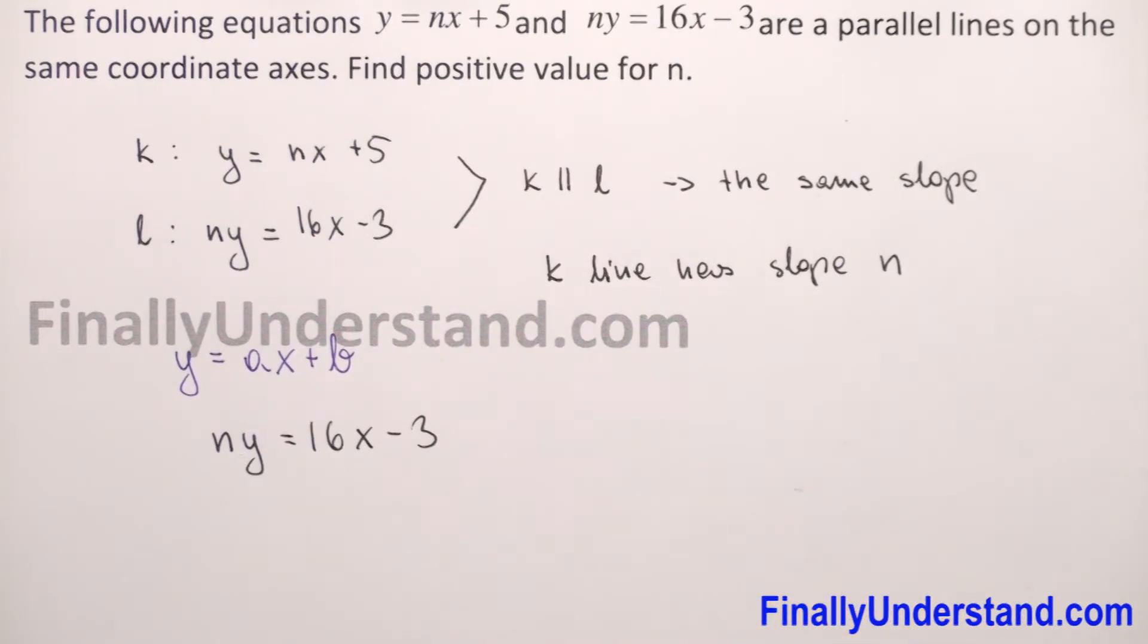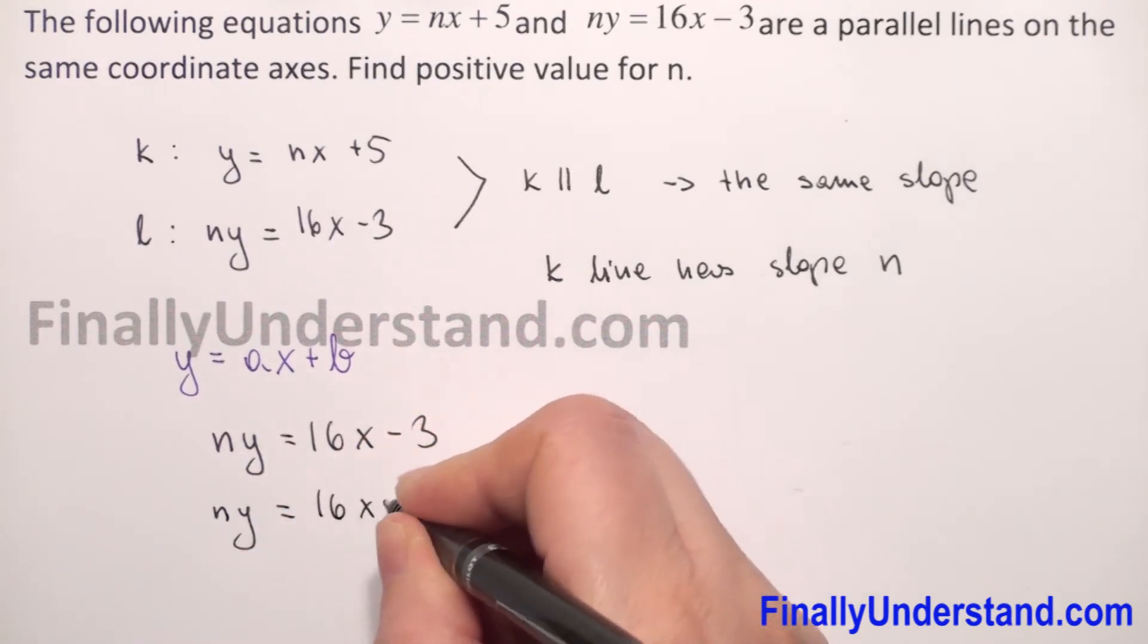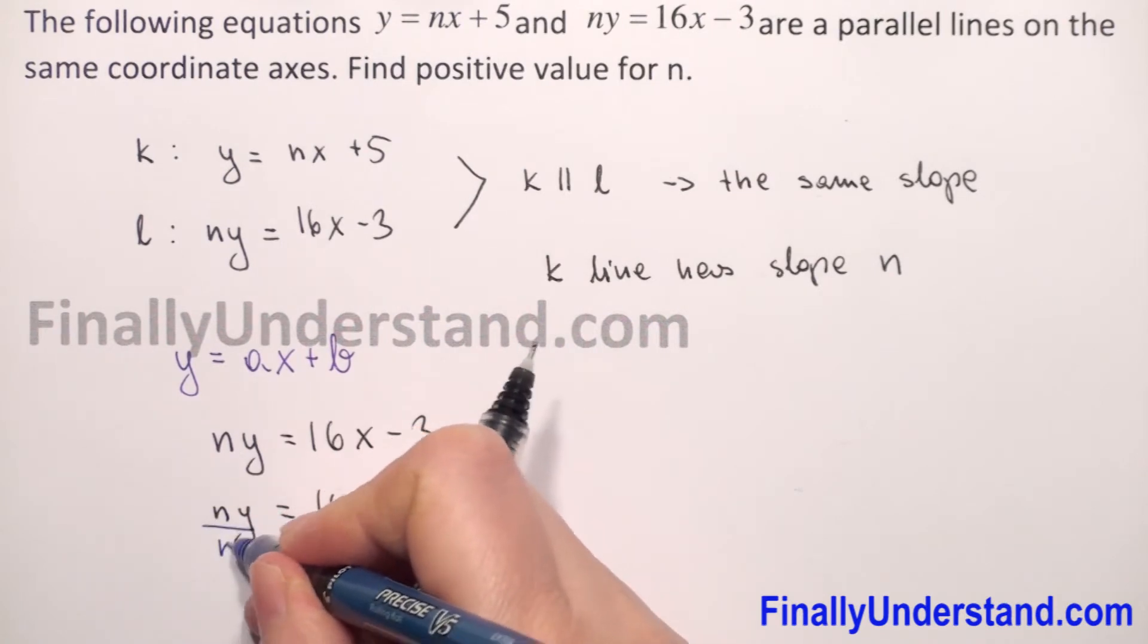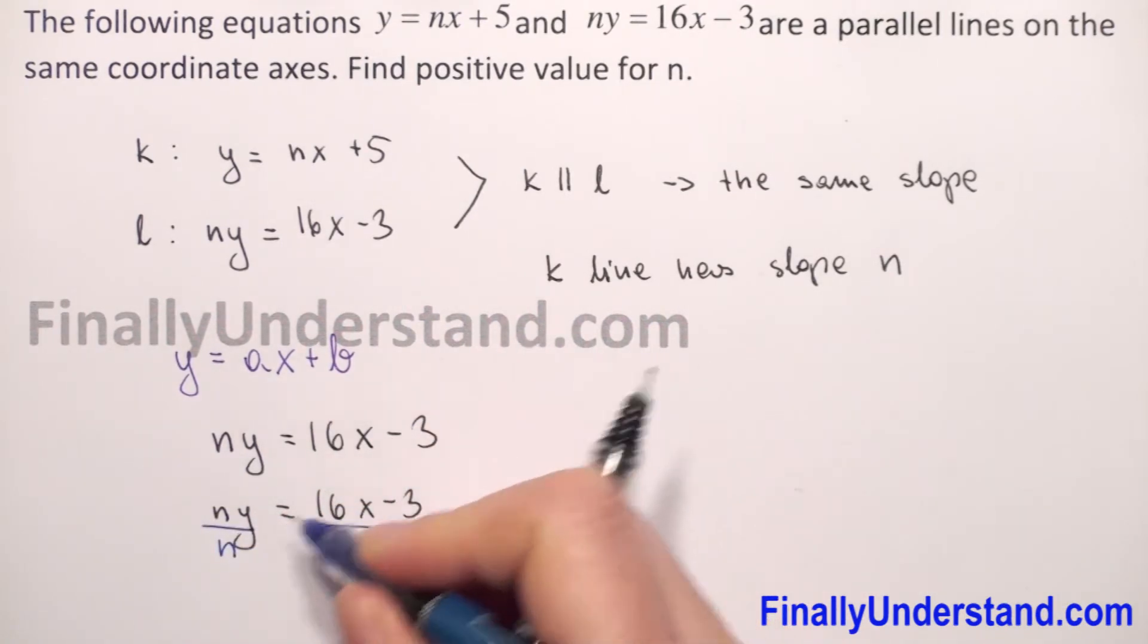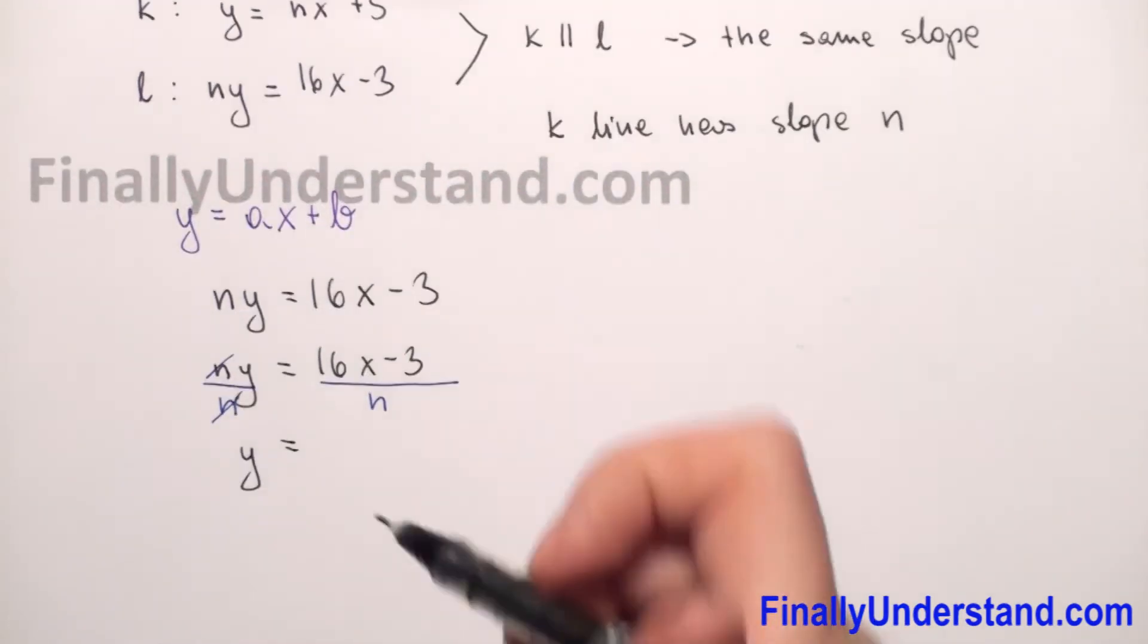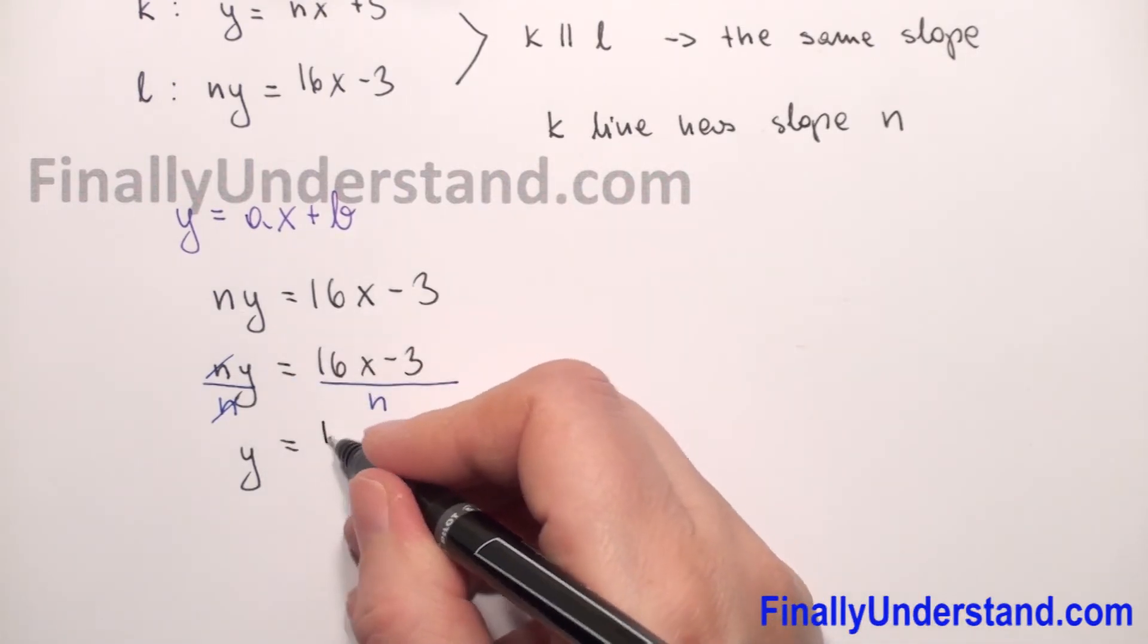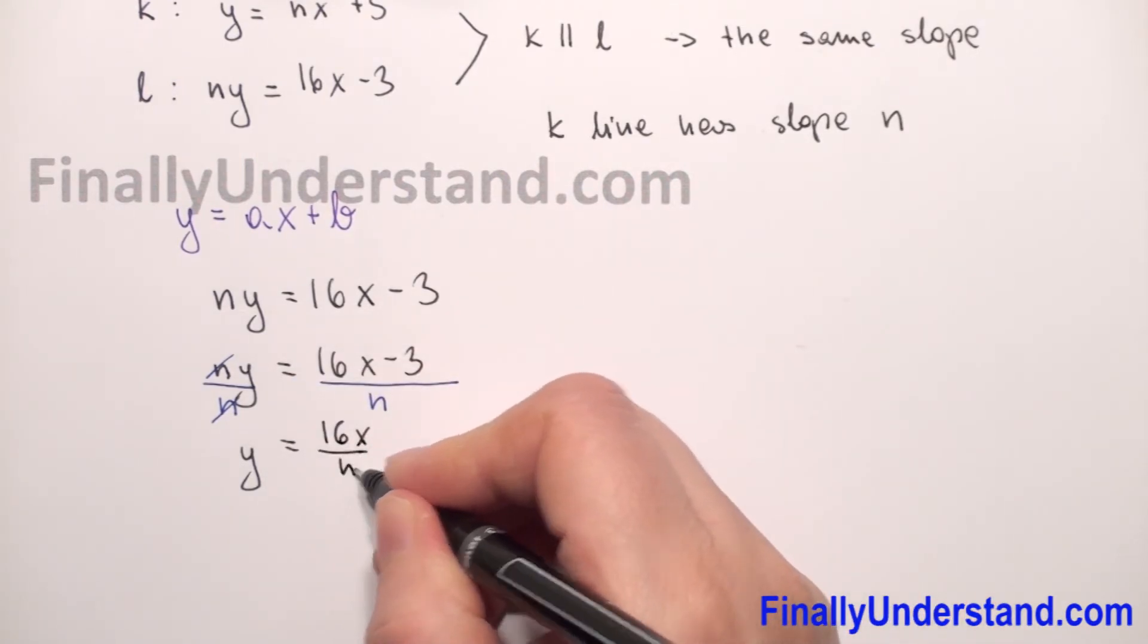Let me rewrite this: ny = 16x - 3. I will divide both sides by n. Then we reduce and we have y equals... Now we have to divide every expression by n, so we divide 16x by n.